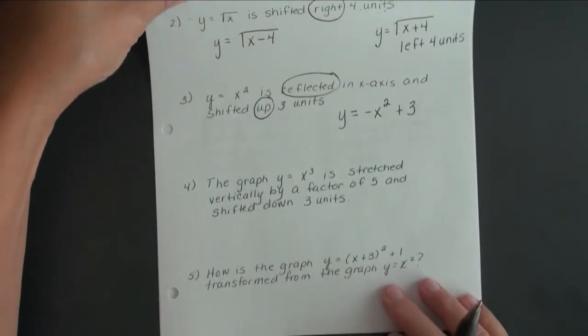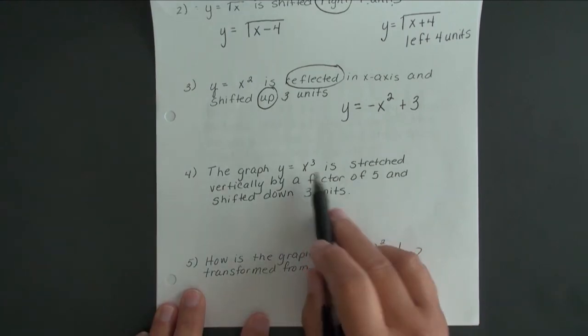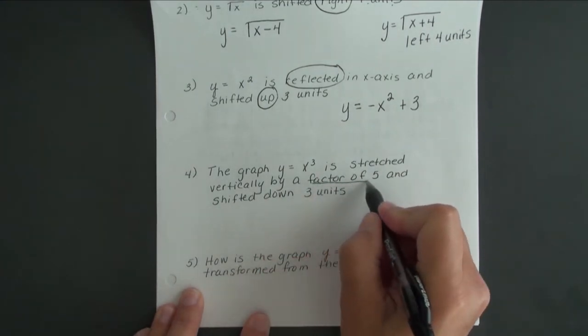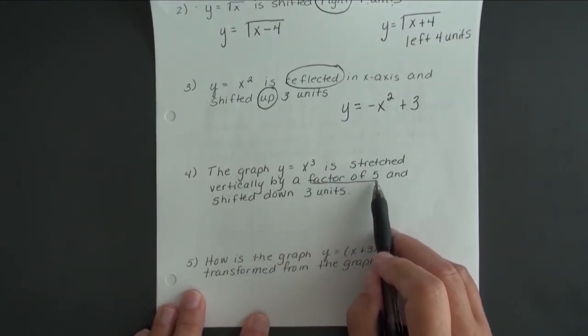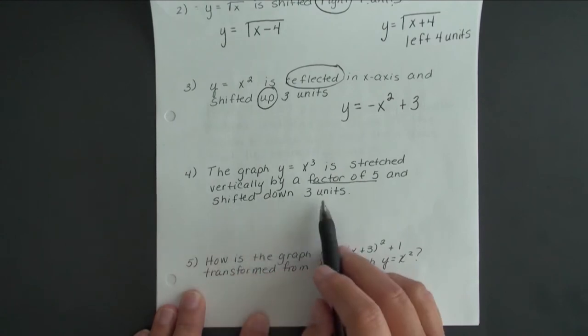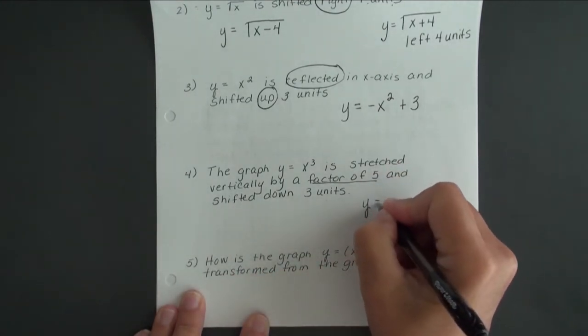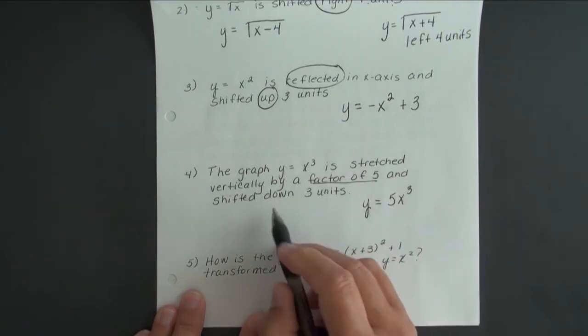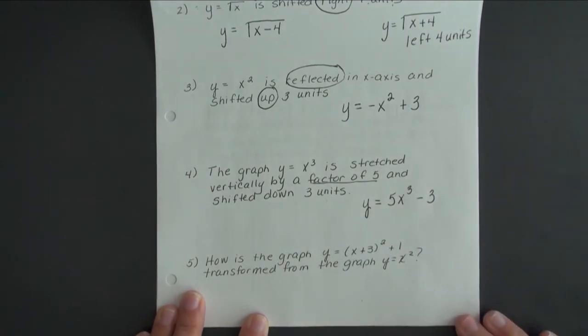Our fourth example says the graph of y equals x to the third is stretched vertically by a factor of 5. That means we're going to multiply the function by 5. Then it is shifted down 3 units. So that would be y equals 5 times x to the third, and shifted down means we subtract 3 from the function.